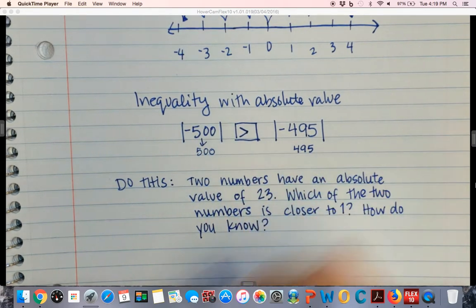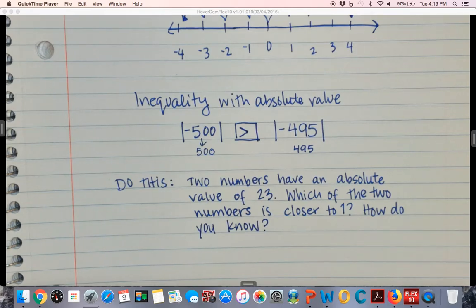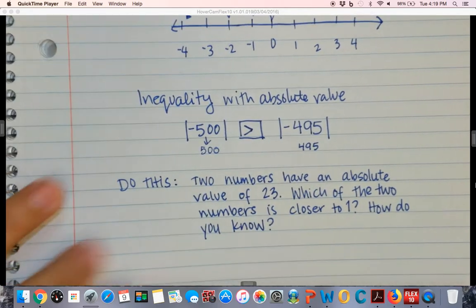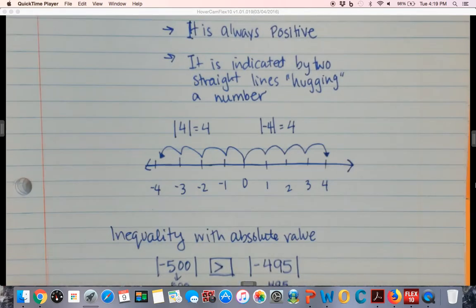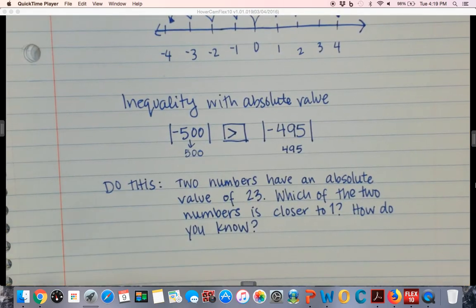First of all you have to figure out what those two numbers are. And based on what I just showed you up here you should be able to figure out which two numbers have an absolute value of 23. Once you have those numbers how do you know which one is closer to one? How can you prove it to me? So I'd like for you to try that and if you need to draw a number line like I said draw a number line or if you can do it without a number line try it without the number line.